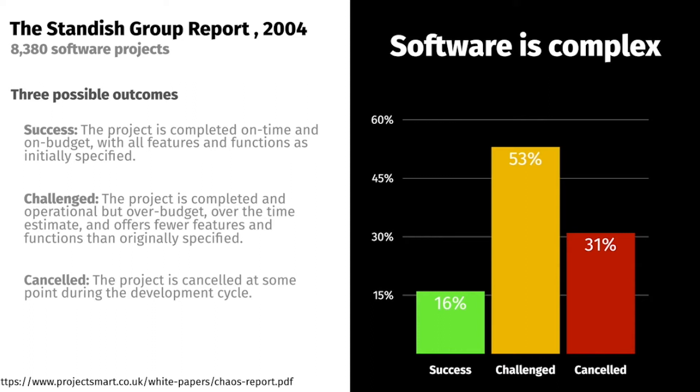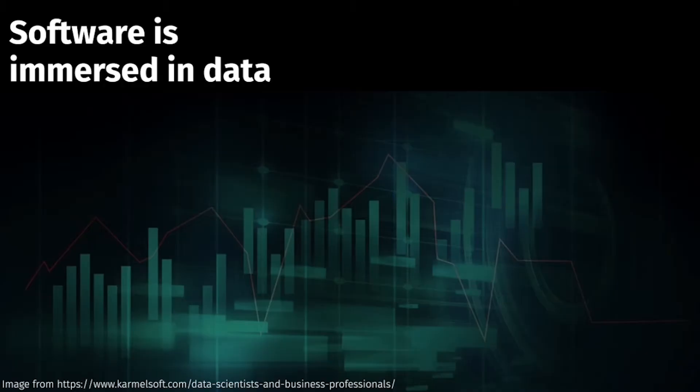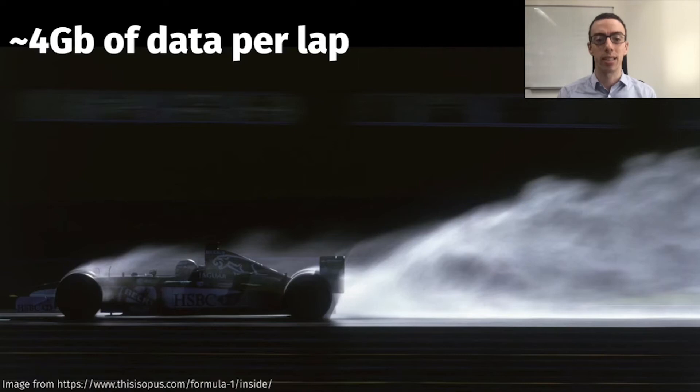This complexity is not only due to the code itself — it's also due to the data that the code generates and manipulates. Software nowadays is immersed in data. For example, a modern Formula One car can generate 4 GB of data per lap, which means something like 15 MB per second.